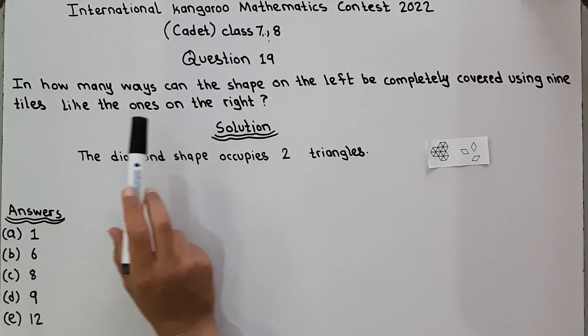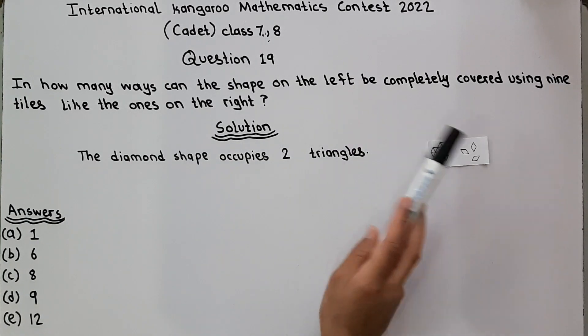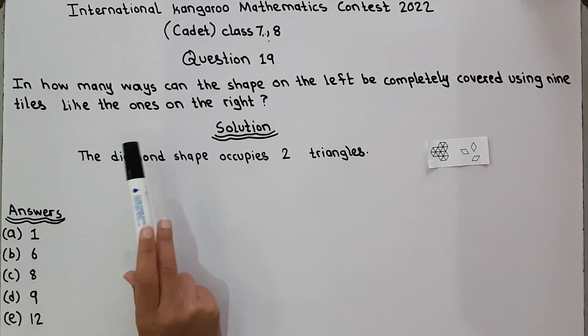In how many ways can the shape on the left be completely covered using 9 tiles like the ones on the right?